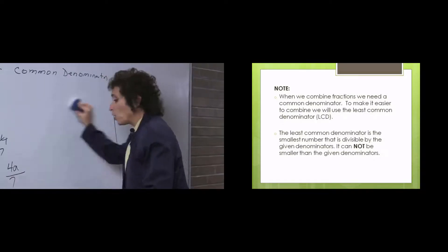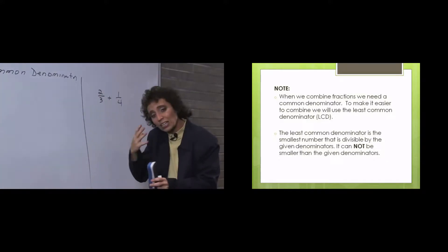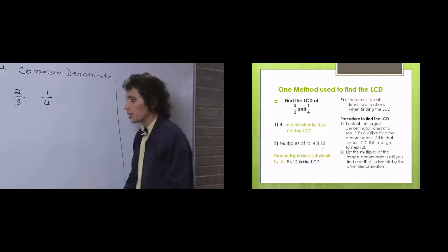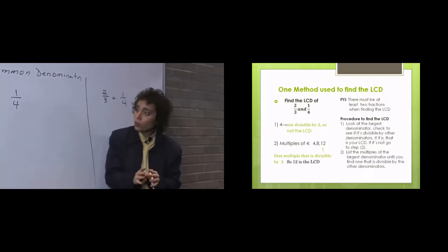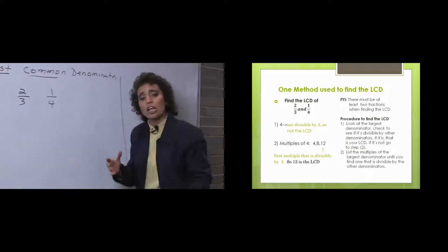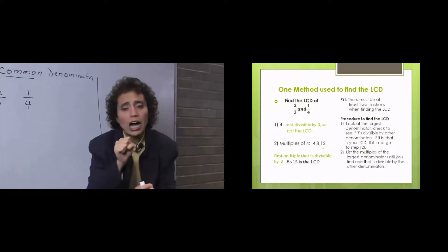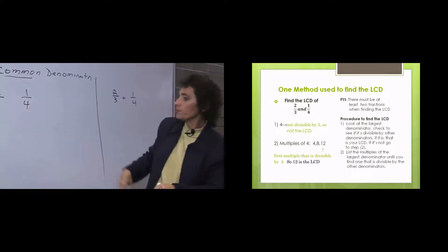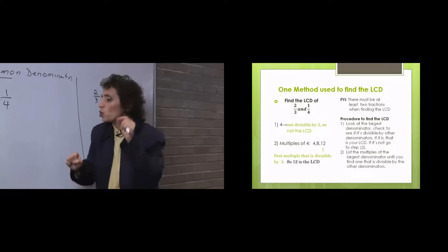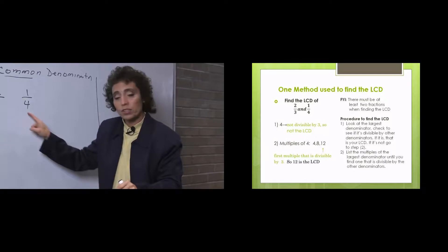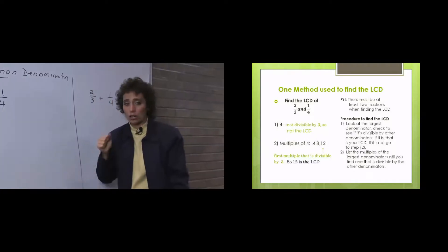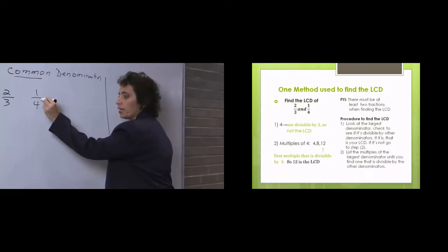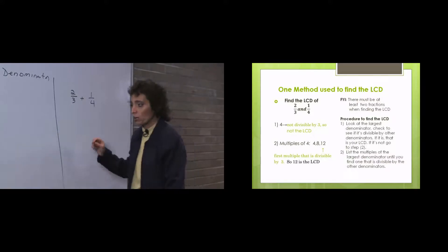Here's what I do. I take 2 thirds and I take 1 fourth, and I have to find a common denominator. We're building these fractions. We want to make 2 thirds bigger — I mean, make the denominator look bigger. I'm going to use a denominator bigger than 3, bigger than 4. My denominator will not be smaller than either one of these numbers, because we're building the fraction. Here's what I do to find a common denominator — we call this the least common denominator, or LCD.